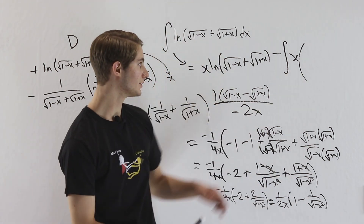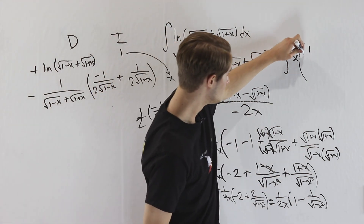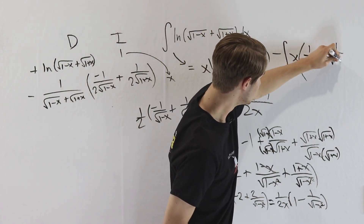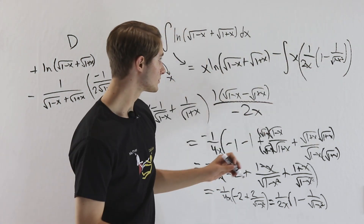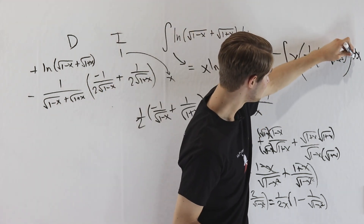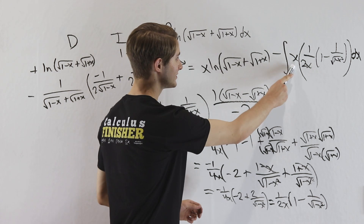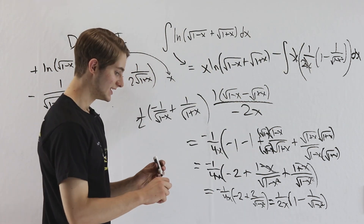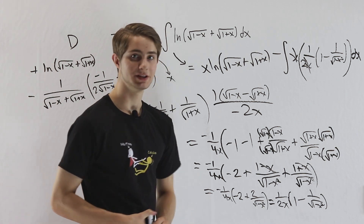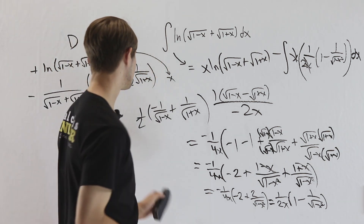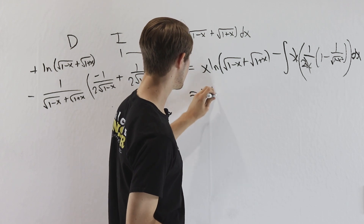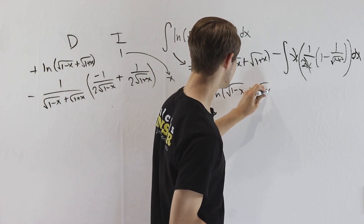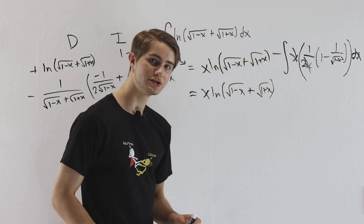Now we plug this into our integral. We have x times 1 over 2x times the quantity 1 minus 1 over the square root of 1 minus x squared, dx. Notice that the x on the top and the x on the bottom cancel, leaving us with a very simple result.